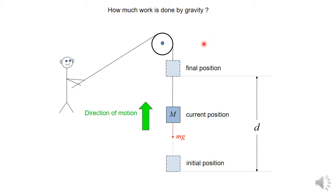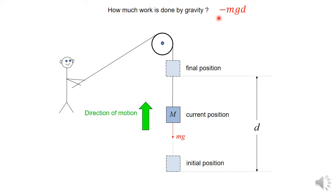What if the situation is reversed? What if the initial position is the lower one and the final position is the upper one — so the person is pulling the rope up and the mass goes upward — and we still want the work done by gravity? Now gravity is acting downwards and the direction of motion is upwards, so they're opposite each other, and you get a minus sign: minus mgd.